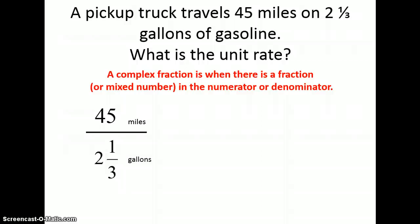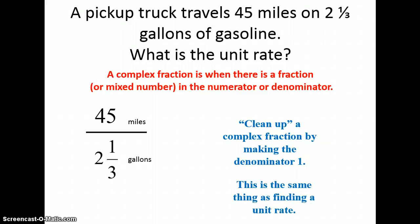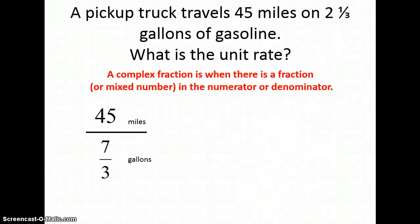And in order to do that, when we're dividing fractions, we need to turn our mixed numbers into improper fractions first. Okay, we want to make the denominator one, just like finding a unit rate. So, when I turn that into an improper fraction, I have seven over three.